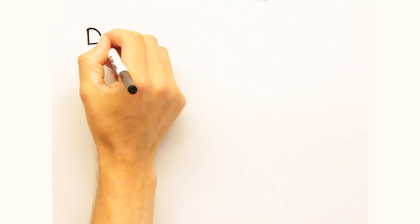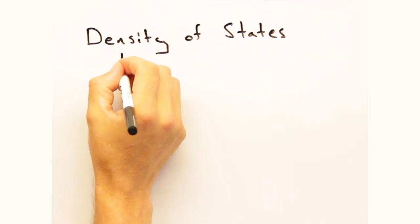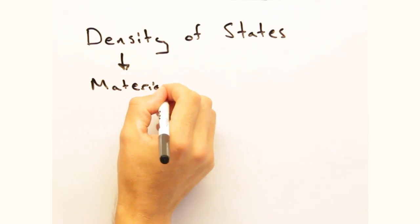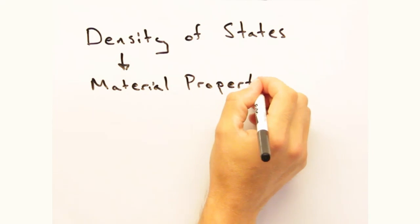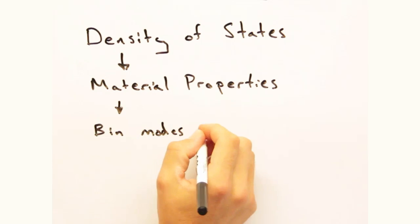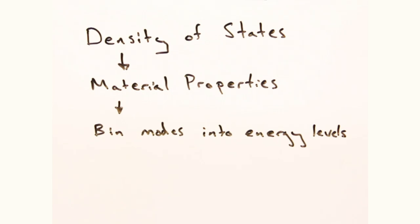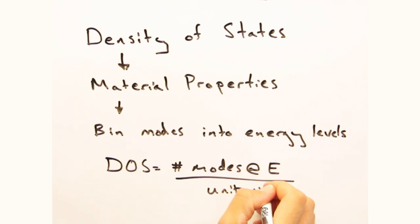Now we want to move on to the second part of today's screencast and talk about the density of states. Ultimately, we want to be able to discuss material properties. But we can't talk about that until we know the energy levels of our system. Rather than thinking about all the individual vibrational modes, it's good to be able to bin them into energy levels. And that's where the density of states comes in. The density of states tells us the number of modes at a particular energy.